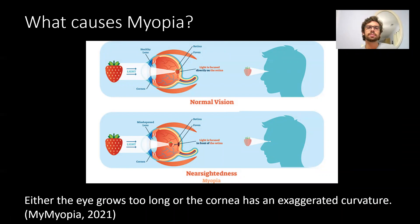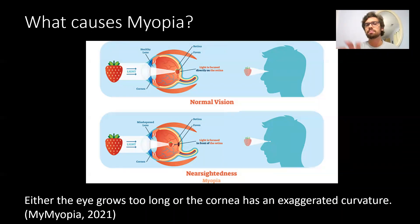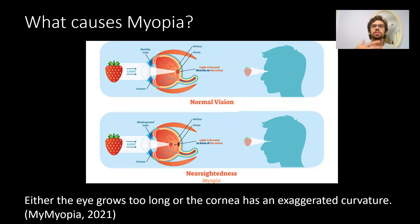What causes myopia is an irregular shape of the eye — the eye is oblong. It can be something called astigmatism, which I particularly have. Either the eye grows too long, or the cornea has an exaggerated curvature. I want to talk about the anatomy of the eye, just briefly, so we can understand what causes myopia and what the physiological response to this condition is.